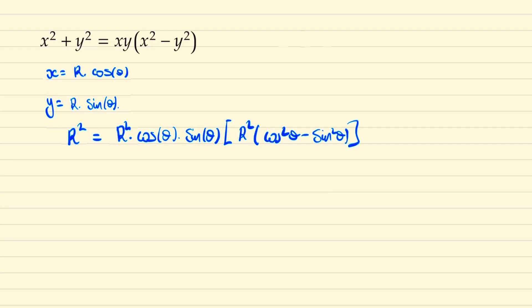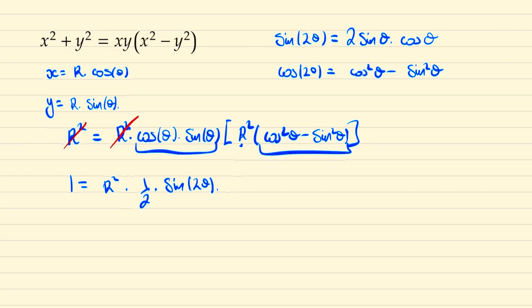So dividing both sides by r squared and then using the double angle formula for sine. So we can note that sine of 2 theta is equal to 2 sine theta cos theta and cos 2 theta is equal to cos squared theta minus sine squared theta. So now this expression reads as 1 equal to r squared times a half sine 2 theta times cos 2 theta.